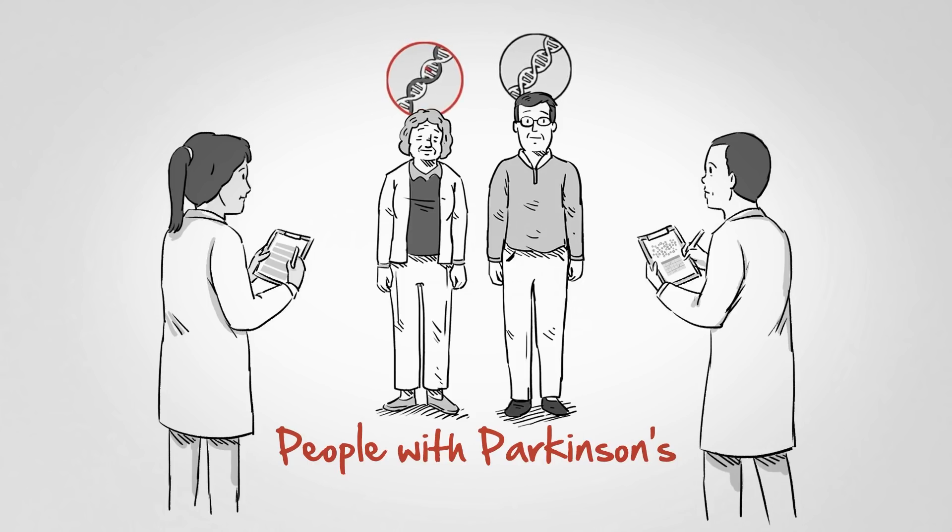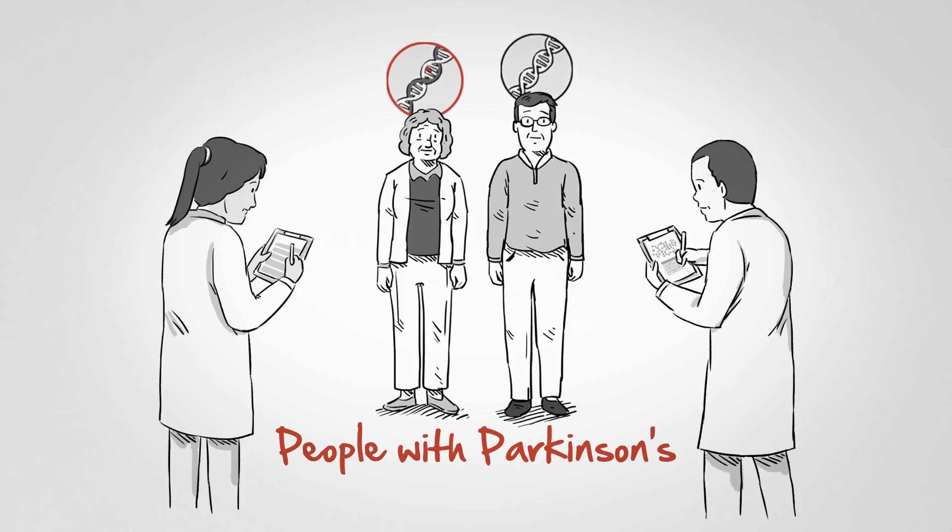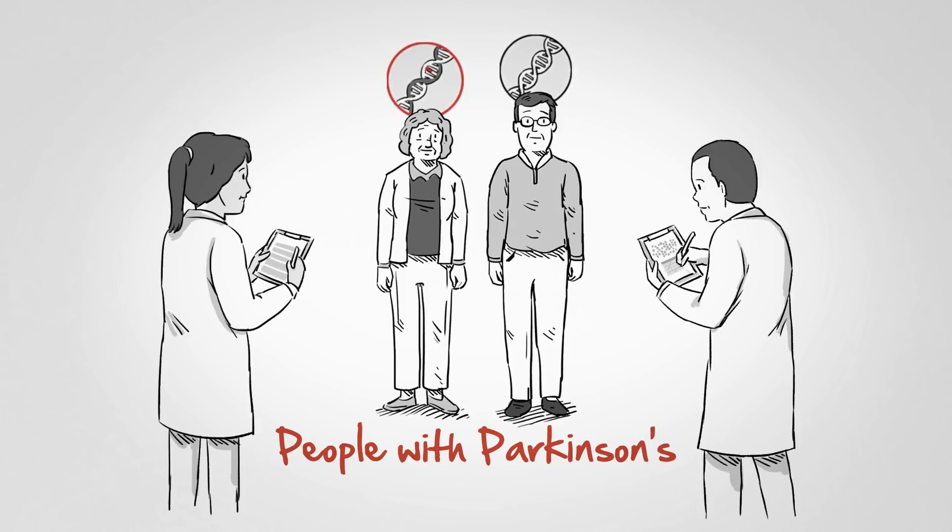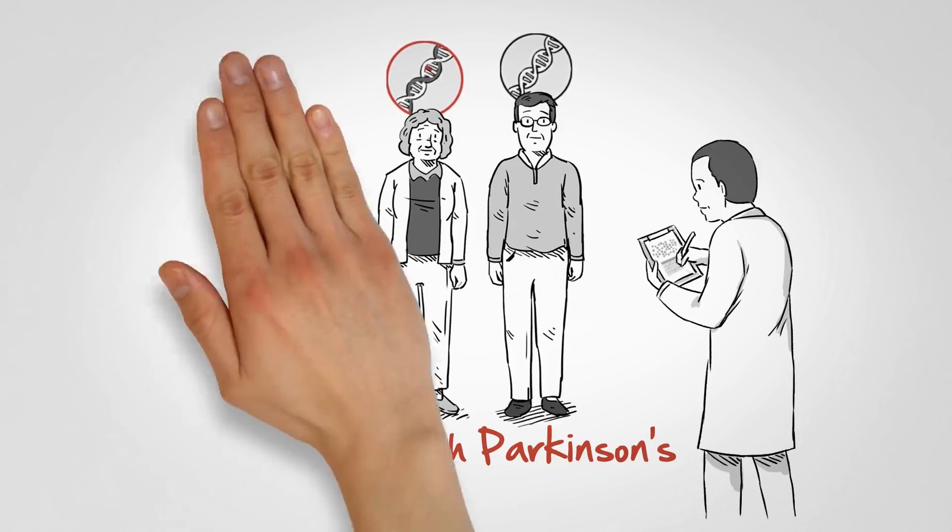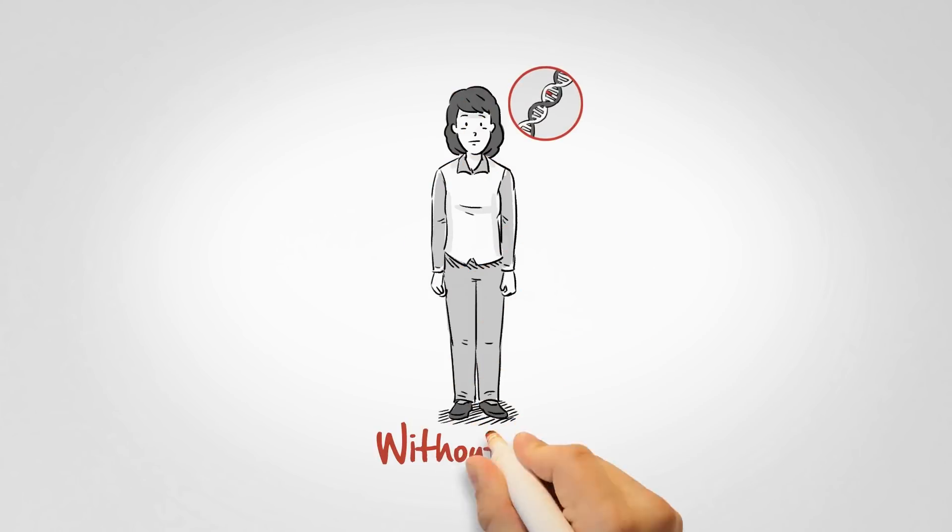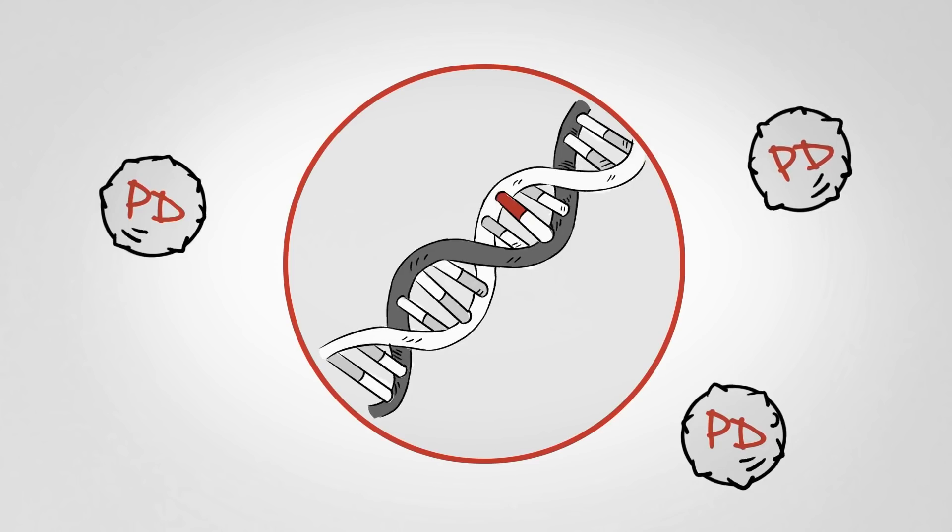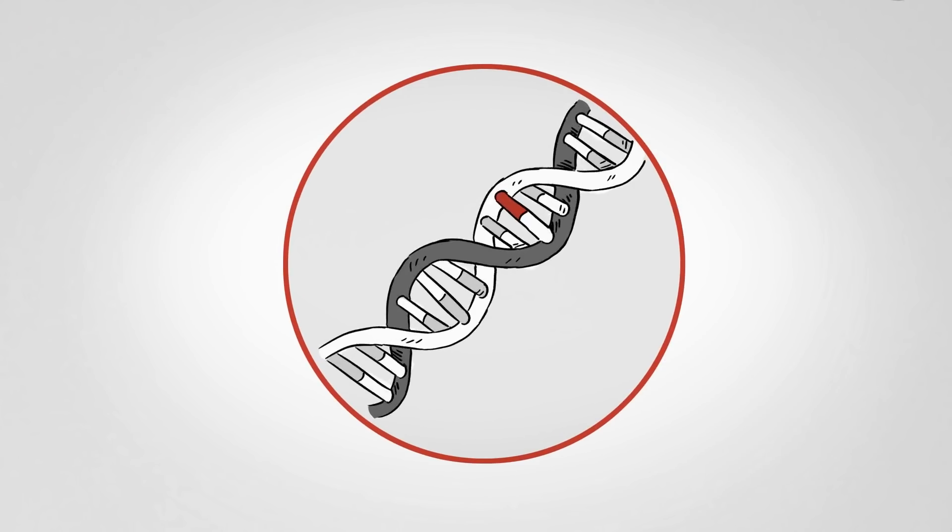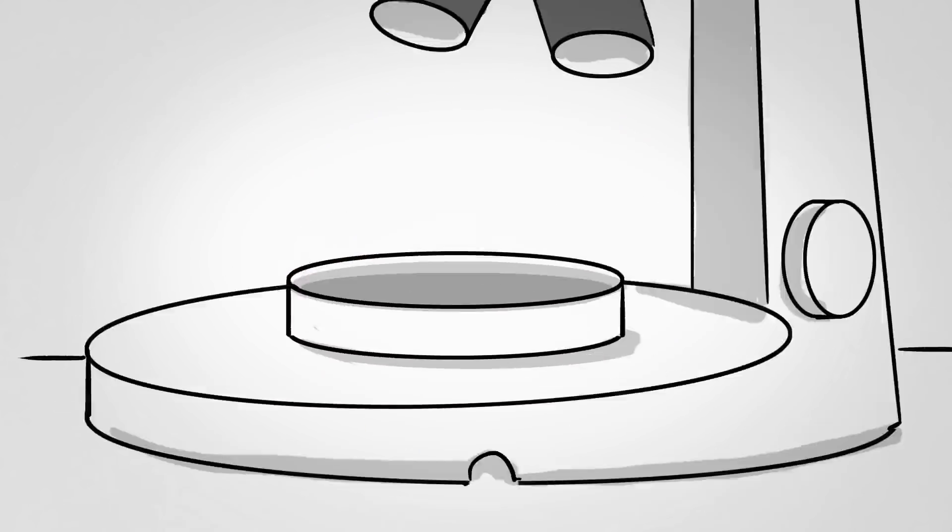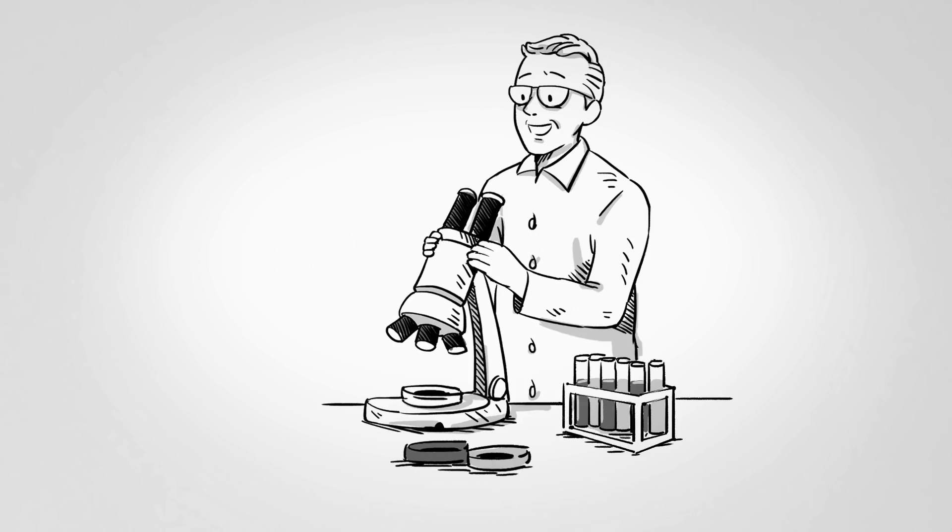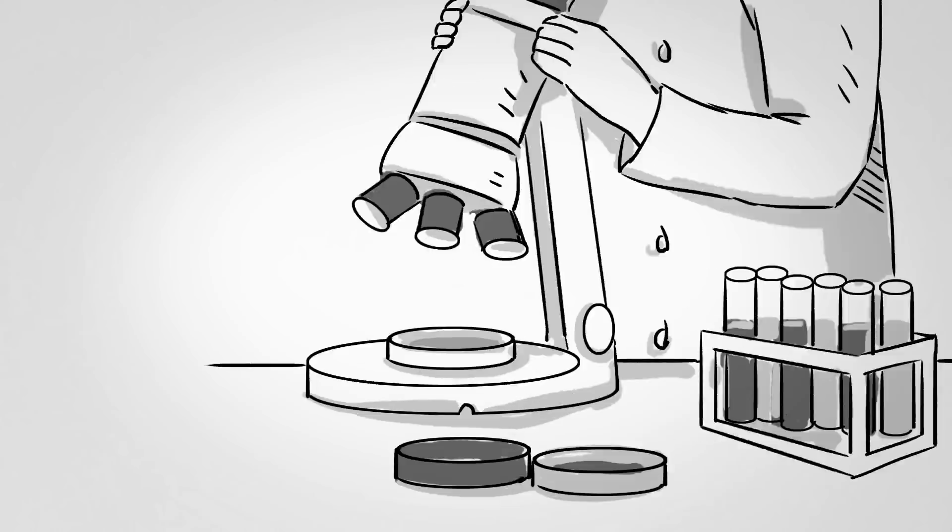By studying Parkinson's genetics, we can get closer to critical understanding that advances all drug development. Just a couple of examples. Some people with mutations never go on to develop Parkinson's. Does this mean they have some other difference that protects them from getting the disease? If we could identify that, perhaps we could find a way to protect more people from getting it.